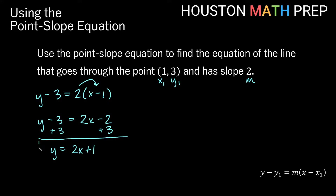So we'll get y equals 2x plus 1 — negative 2 plus 3 gives us plus 1. Here we can see we have a line with slope 2 and a y-intercept of positive 1. y equals 2x plus 1.